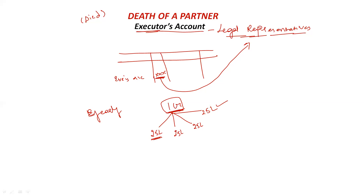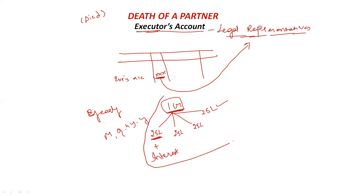These installments can be monthly, quarterly, half-yearly, or yearly — it depends upon the business organization. But we have to remember that along with the principal amount, the business also has to pay certain interest every year to the executors. For showing all this process — how many installments and how much interest has been paid — we prepare the executors account.